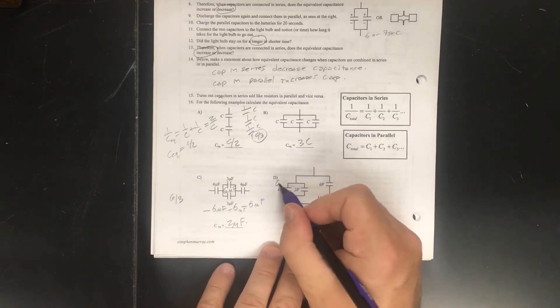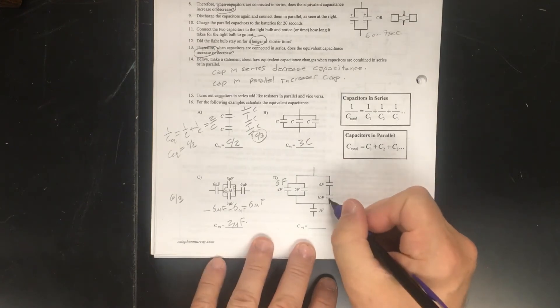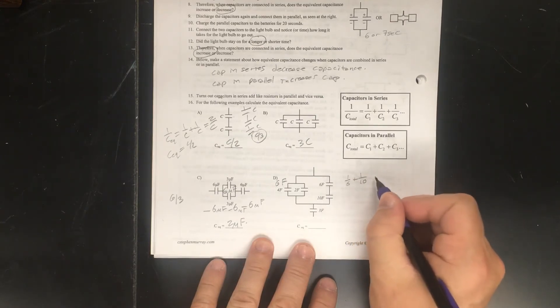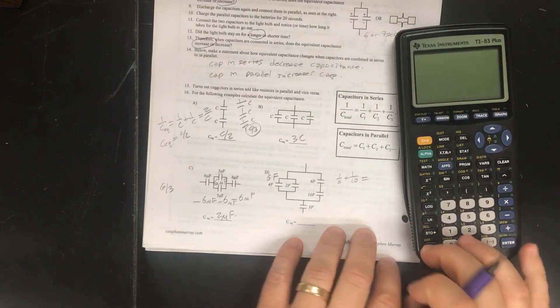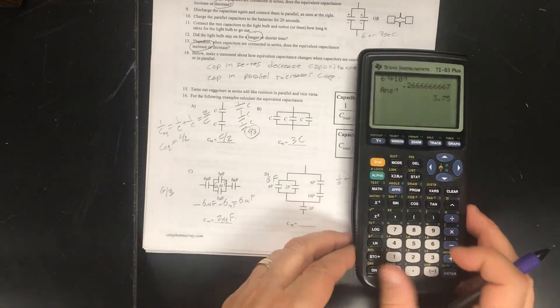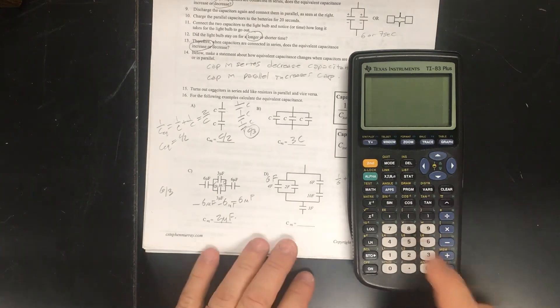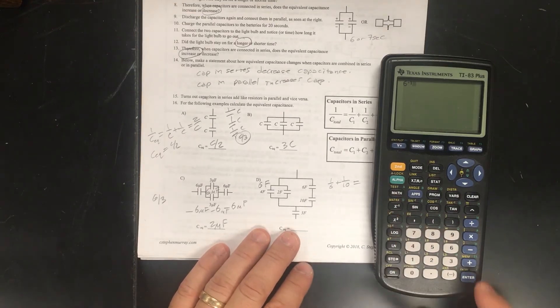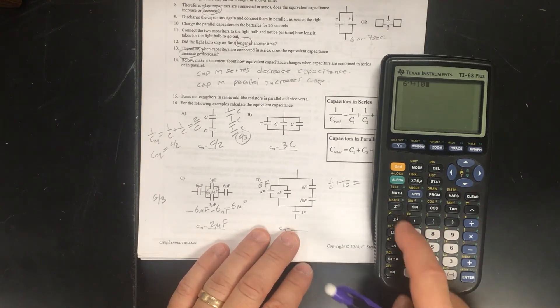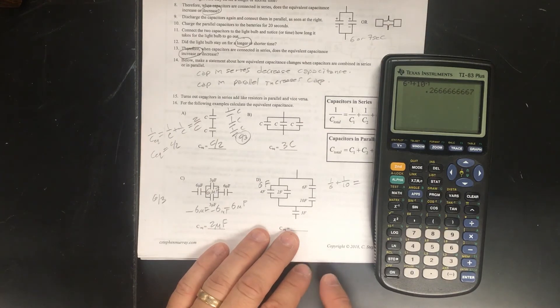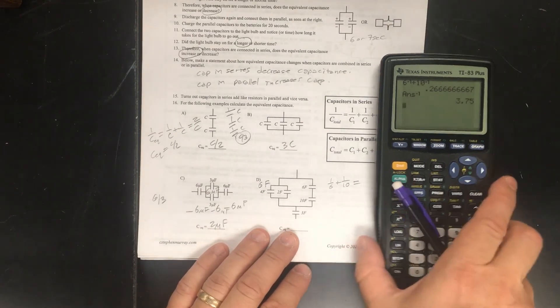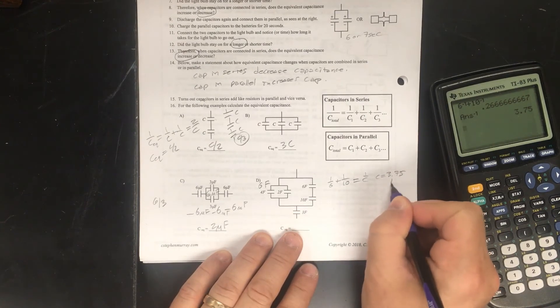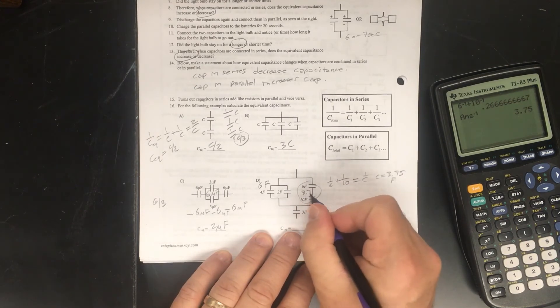Over here, this is going to be equal to a 6 farad, which by the way would be huge. These two we have to do are in series, so this will be 1 over 6 plus 1 over 10. Let me show you the fastest way of doing this. We could do common denominator and all that, but here's the fastest way. See if you can see this fine. This 1 over x to the minus 1 key is what we want to do. 6 to the minus 1 plus 10 to the minus 1. Then that gives me 1 over C. Then I hit it again. There you go. 3.75.